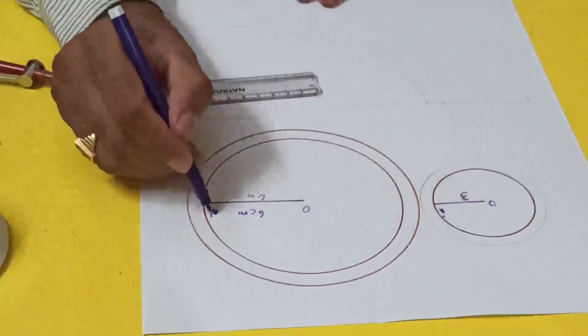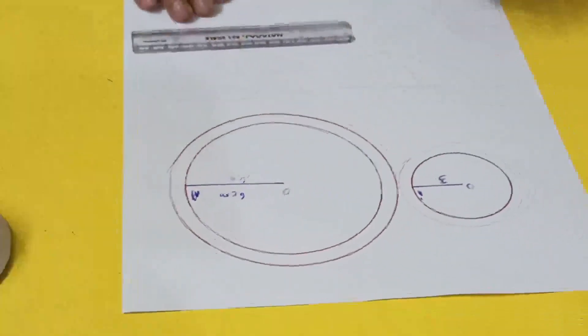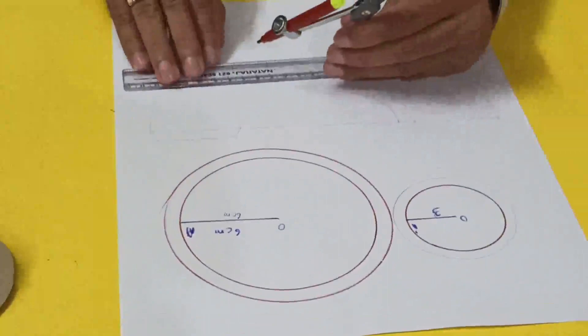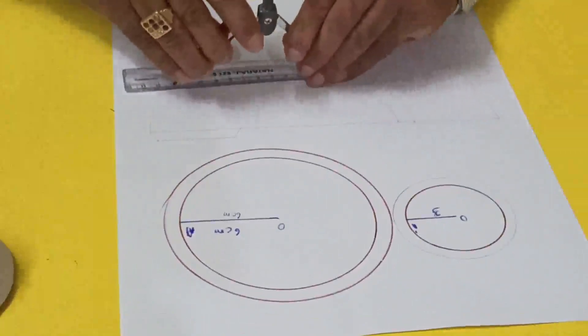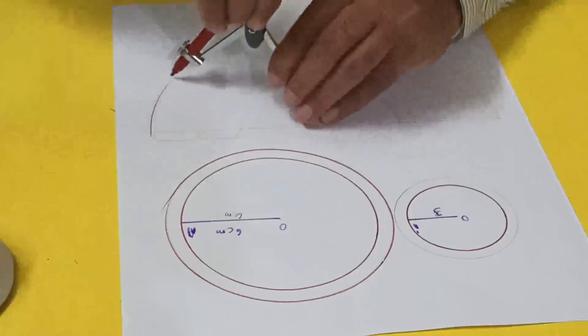Twice the radius, so 12 centimeters total diameter, and drawing a semicircle.